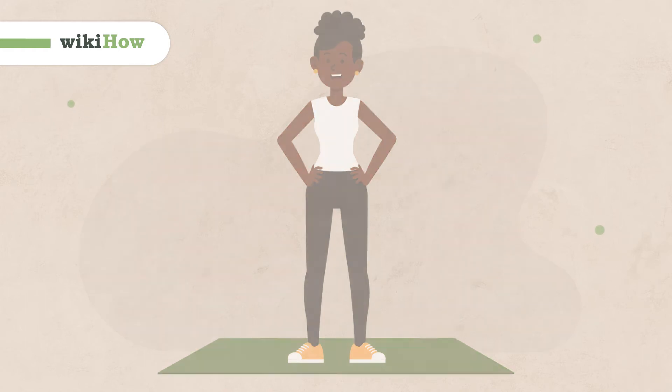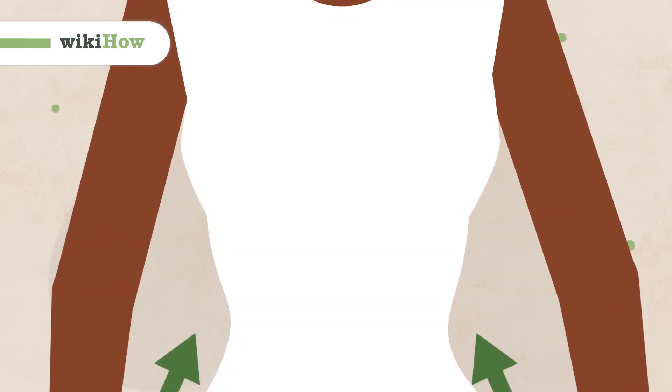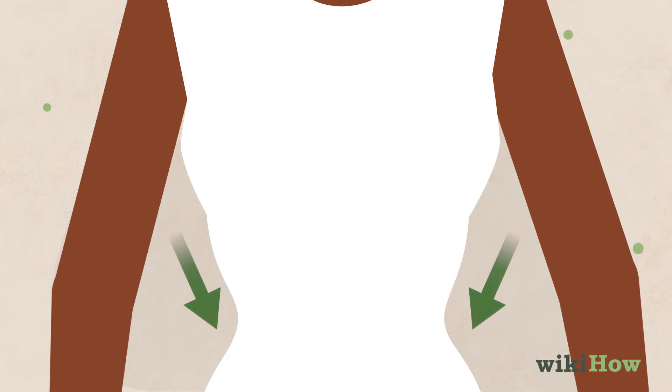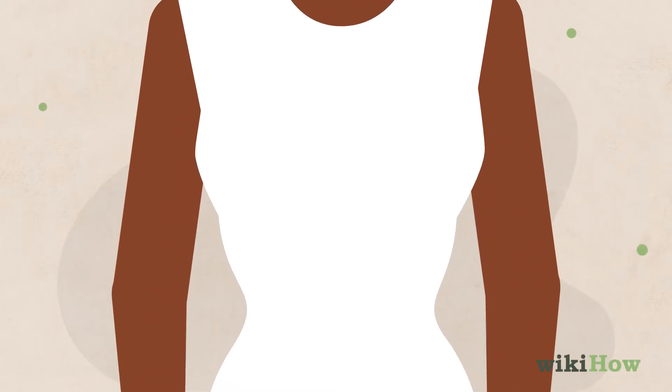To do a belly roll, you'll need to isolate your upper abdominal muscles, found right under your ribs, from your lower abdominal muscles, found below your belly button.